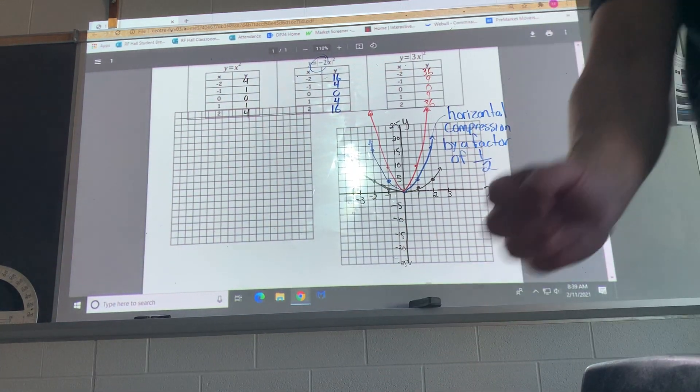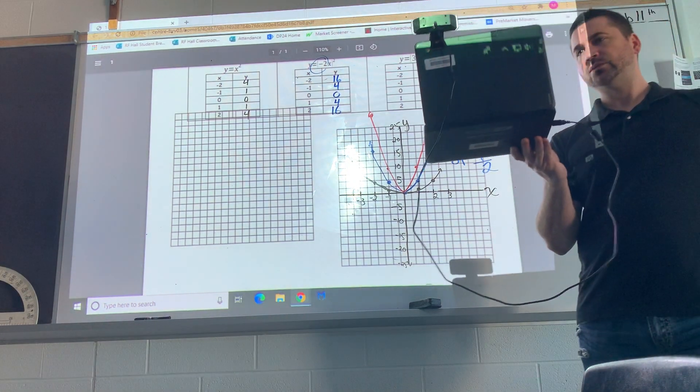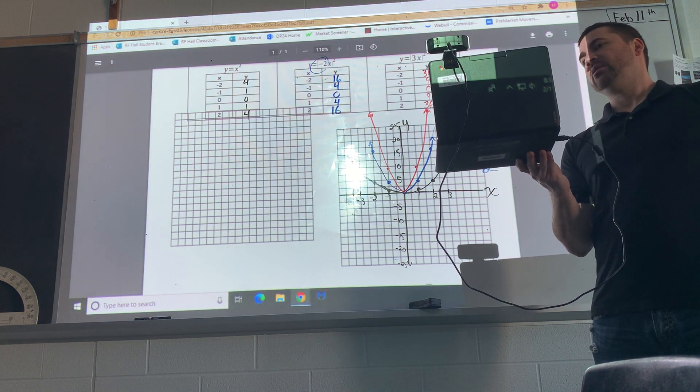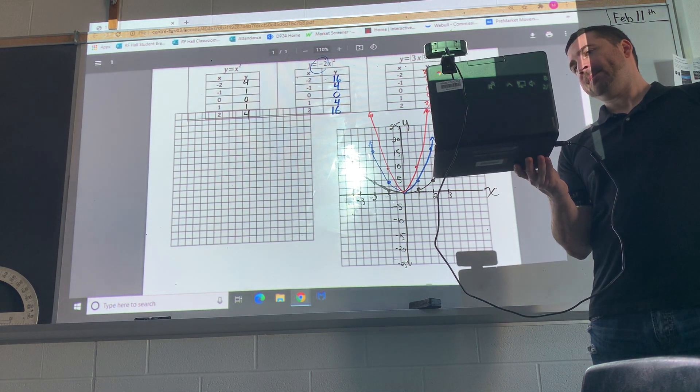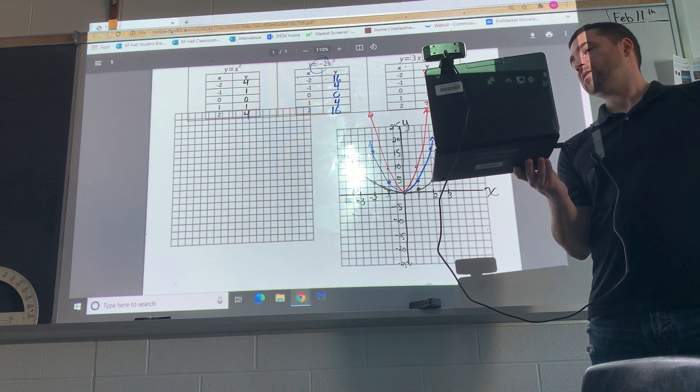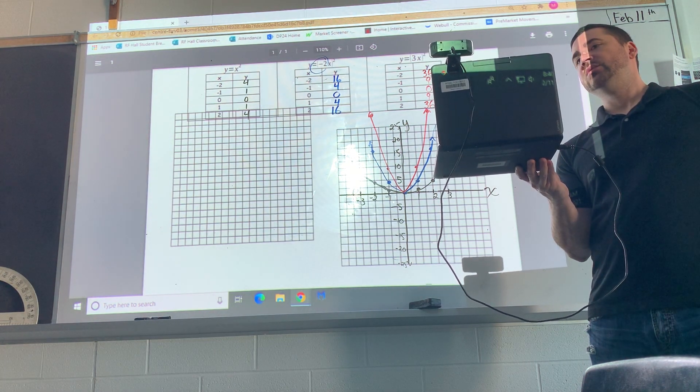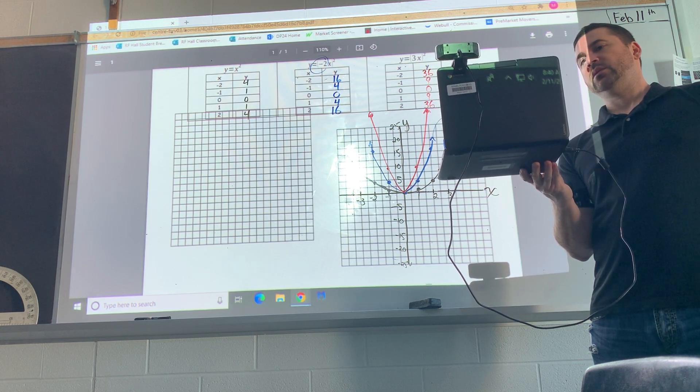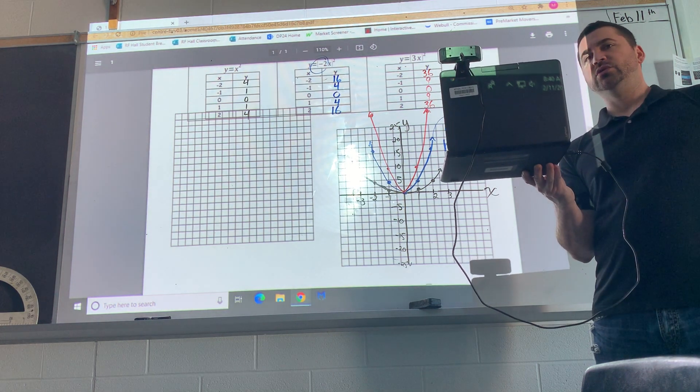And I'm going to bring this camera closer so you guys can see. Okay, so the blue one is a horizontal compression by a factor of 1 over 2, or a half. Because the formula is 1 over k, so we do 1 divided by k value, which is 2, so 1 divided by 2.